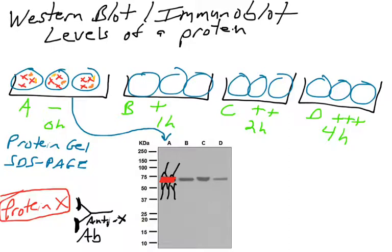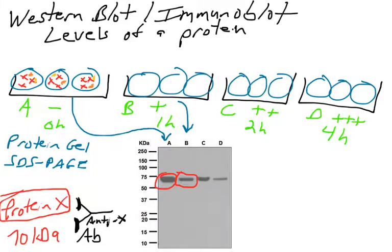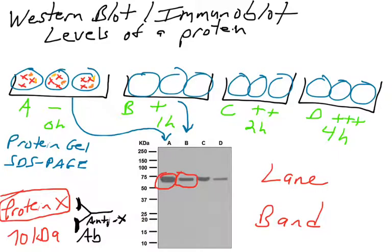The more protein X is present, the more antibody will bind, and we have methods to detect where antibodies bind on a Western blot. In this example, protein X is about 70 kilodaltons in size, and there's a certain amount of it in sample A. In sample B, there's another band — a term we use for these intense areas on a gel. The intensity of a band is directly proportional to the amount of protein present in those cells. The band from sample B is slightly less intense than the band from sample A.